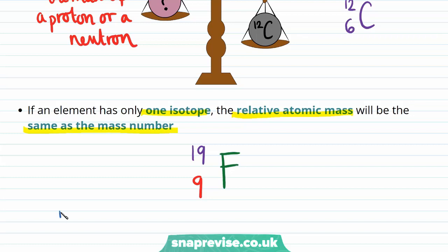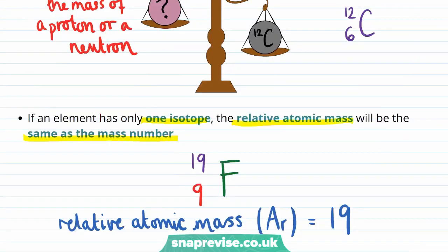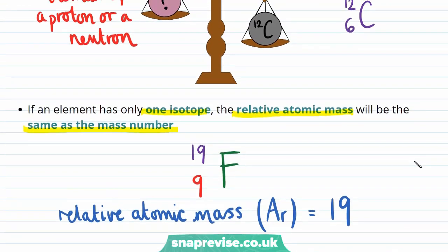So for fluorine, the relative atomic mass, or Ar value, is just going to be equal to the mass number, which we can see from the nuclear symbol is 19. What this means is if an atom of carbon-12 has a mass of 12, then an atom of fluorine has a mass of 19, allowing you to compare the mass of atoms using easy round numbers, rather than getting an answer in terms of kilograms.